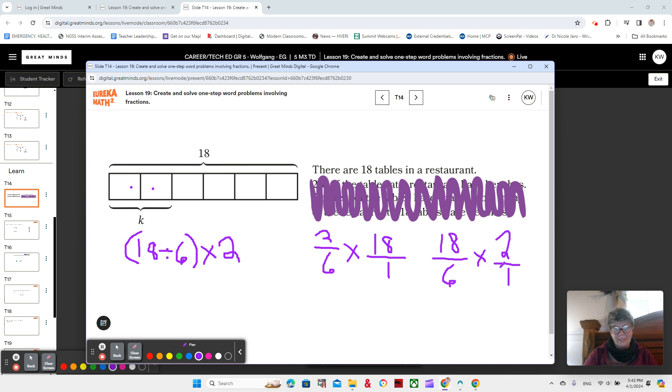Now, what could be the word problem that we're looking for? What could be our word problem that is missing? There are 18 tables in the restaurant. This is where we get to be creative because we're making up our own word problem.